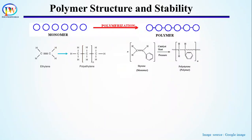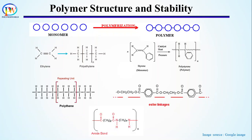Polymers are formed by joining several monomers like ethylene, propylene, styrene, etc. The monomers in the polymers are mainly connected by carbon-carbon, amide, or ester bonds. These bonds are not very strong, and in the presence of extreme conditions like high temperature, UV light, oxygen, or moisture, they can easily break.